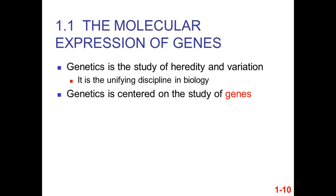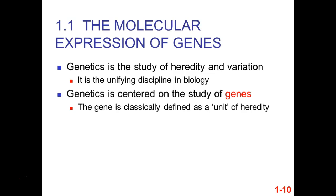Like green fluorescent protein — we know the exact code, that segment of A's, G's, T's, and C's that will cause a cell to make that specific protein. The gene is classically defined as the unit of heredity — it makes you who you are, and you get it from your parents.